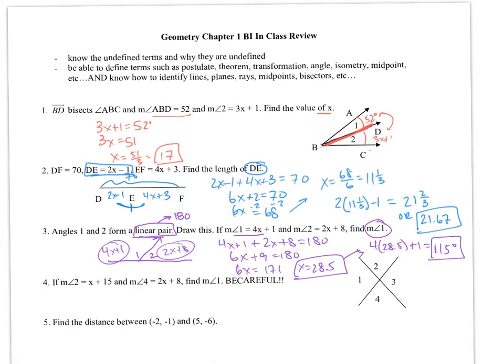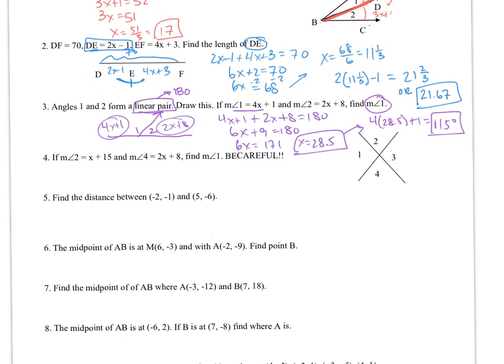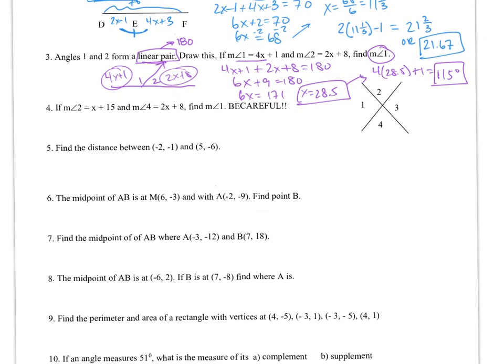Moving on to number 4. On number 4, it says the measure of angle 2 is 2x plus 15, and the measure of angle 4 is 2x plus 8. These two are congruent because they're vertical angles. But it's asking me to find the measure of angle 1. Since I know 2 and 4 are congruent because they are vertical angles, I can set them equal to each other.